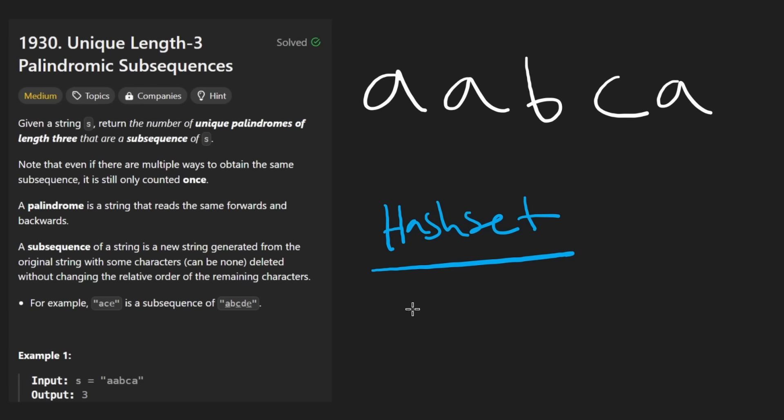And the easiest way to do that is to keep track of all the palindromes that we've seen in a data structure. I'm going to use a hash set. It's pretty easy to do that. And in fact, we don't actually need to store the entire palindrome itself. Suppose we had A, B, A as the palindrome.